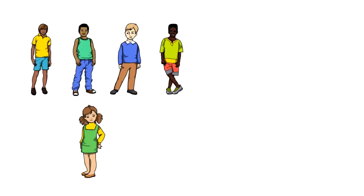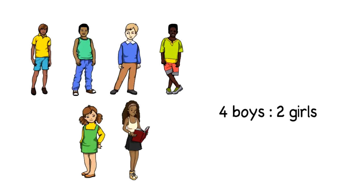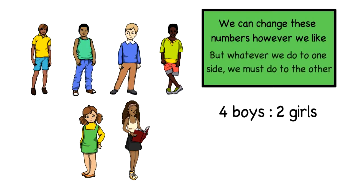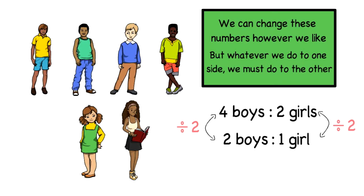Here we've got four boys and two girls. We can simplify these numbers by dividing them both by the same thing. We can change the numbers however we like, but whatever we do to one side we have to do to the other. Both of these numbers can be divided by two, so if I divide four by two I'll get two, and two divided by two gives me one.